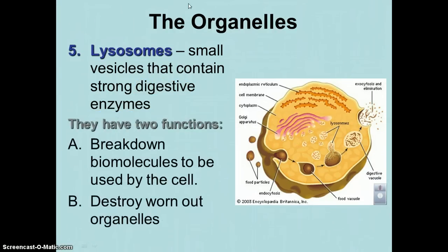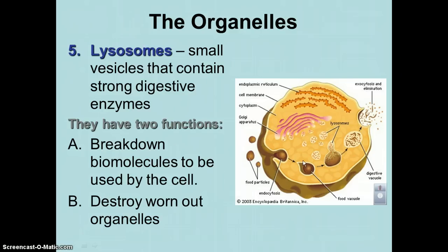If you look over here, you'll notice this piece of food particle right here being engulfed by this cell in a process known as endocytosis — a process we'll learn about later in the chapter. When the food moves in through endocytosis, it's wrapped in a big membrane bubble called a vacuole. The only difference between a vesicle and a vacuole is size — vacuoles are much bigger.